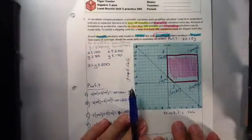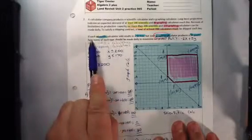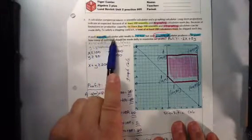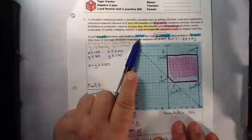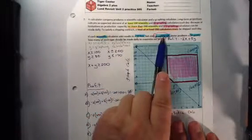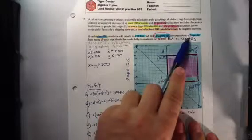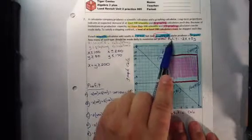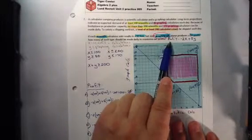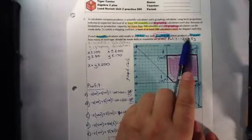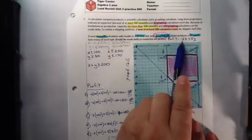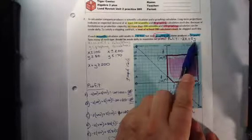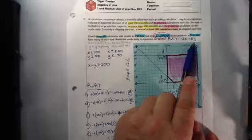Now that we have our feasible region and all the corner points, which will be where our maximums and minimums will be located, we can continue to read. If each scientific calculator sold results in a $2 loss, but each graphing calculator produces a $5 profit, how much of each type should be made daily to maximize profit? We can write a profit equation: negative 2X plus 5Y, representing the loss on scientific calculators and profit for the graphing calculators.